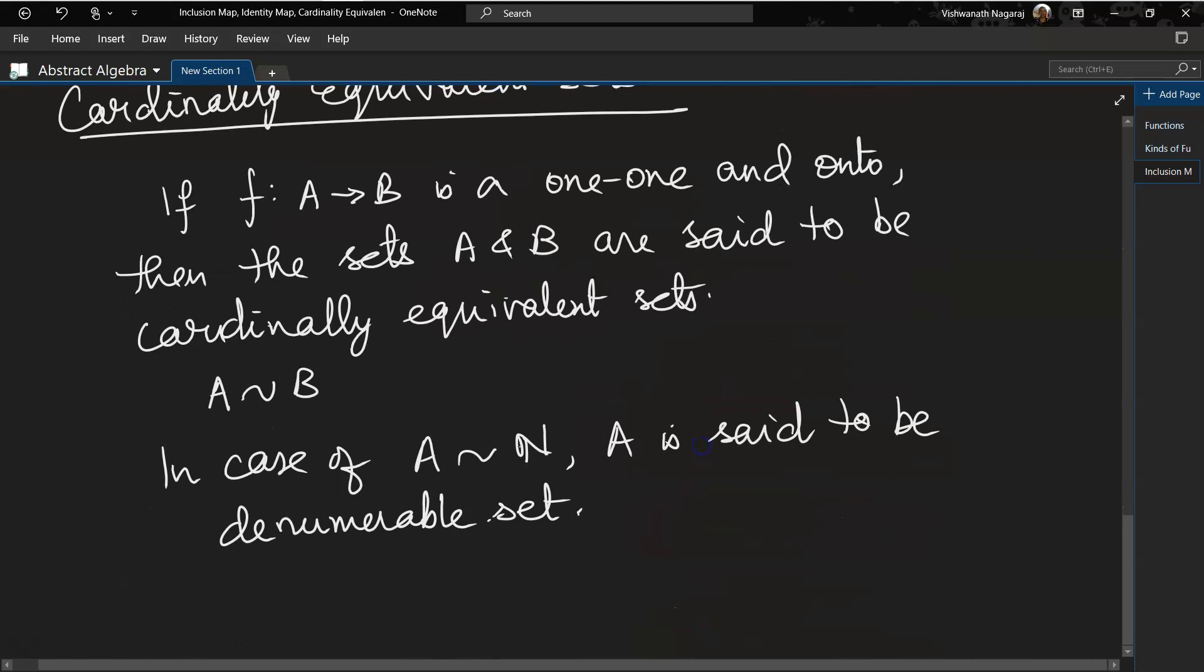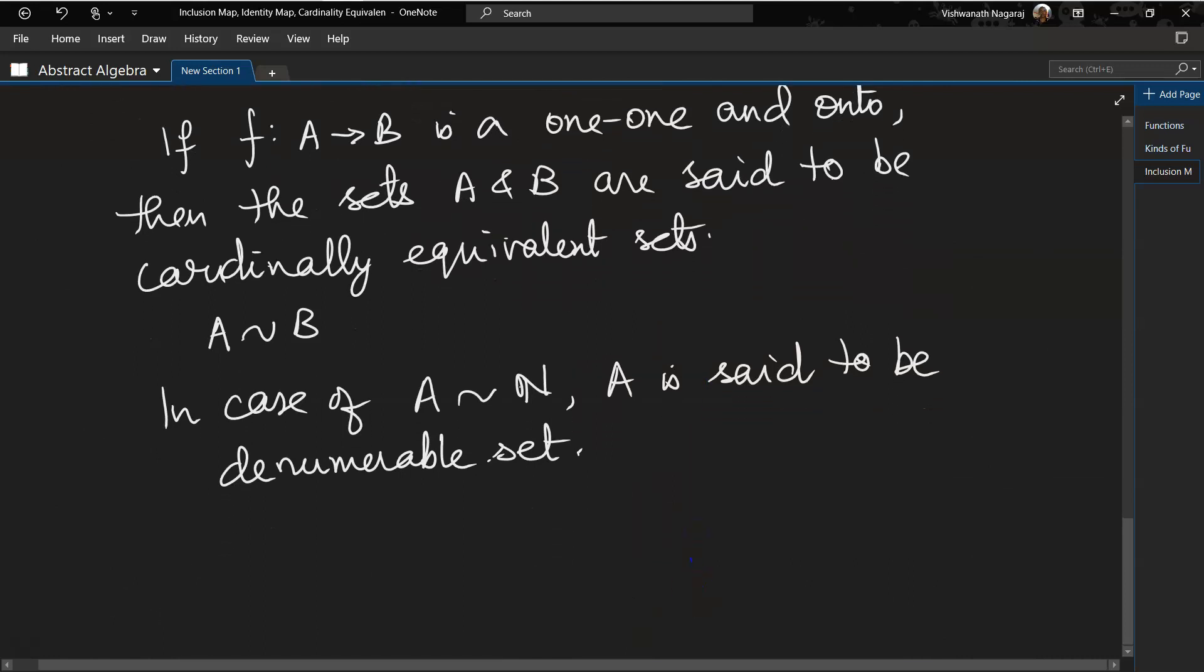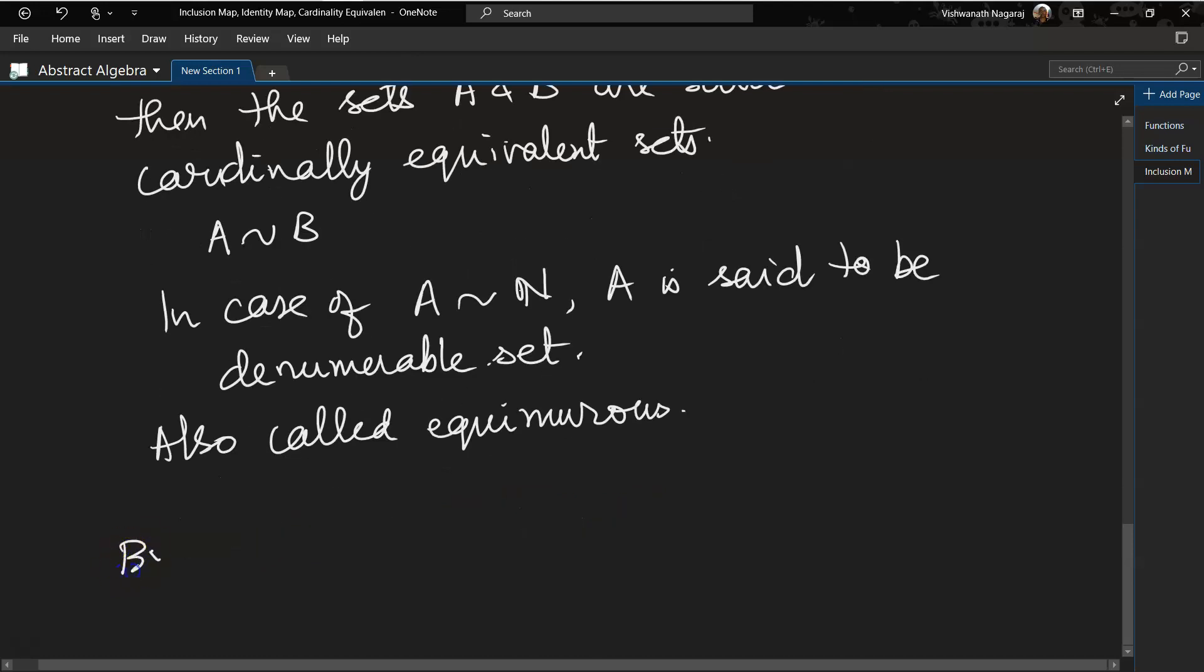and cardinally equivalent sets, which means basically both the sets have the same number of elements. Now this is also called equinumerous, meaning equal number of elements. That's it, bye.